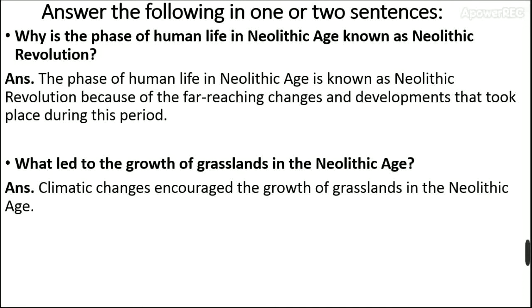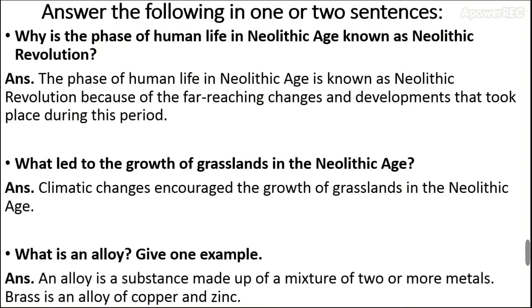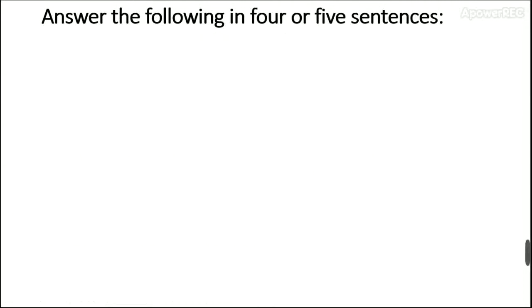What is an alloy? Give an example. An alloy is a substance made up of a mixture of two or more metals. Brass is an alloy of copper and zinc. Now, answer the following in four or five sentences.